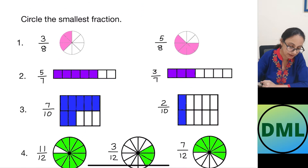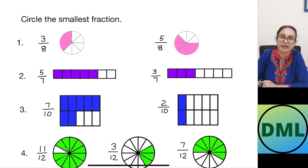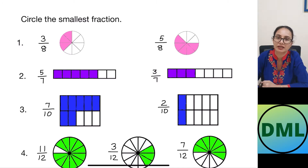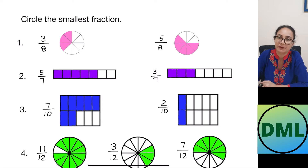Now let's see the smallest and the greatest fractions. Circle the smallest fraction — you have to circle which fraction is the smallest.